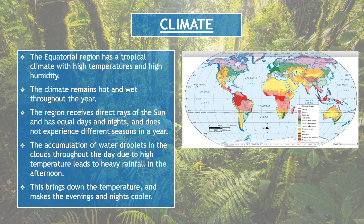The region receives direct rays of the sun and has equal days and nights, and does not experience different seasons in a year. इस region में लोग equal days and equal nights experience करते हैं। The accumulation of water droplets in clouds throughout the day due to high temperature leads to heavy rainfall in the afternoon. This brings down the temperature and makes the evenings and nights cooler.